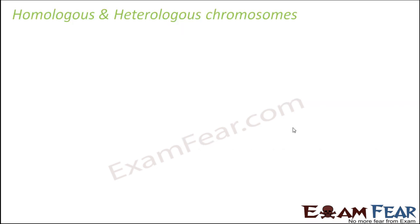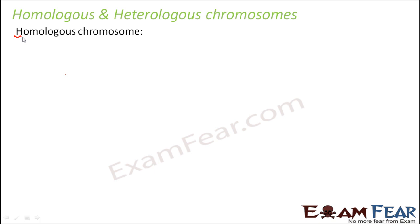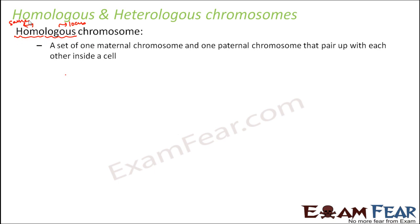Another important thing that we will talk about here is homologous and heterologous chromosomes. The term 'homo' means same, and 'locus' defines position. So basically, homologous chromosomes are a set of one maternal chromosome and one paternal chromosome that pair up with each other inside a cell — they are similar to each other.